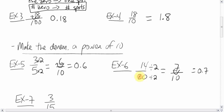Now, some of you might have thought, oh, I can make 20 into 100. And you can do it that way as well. 20 can become 100 when you times it by 5. Do the same to the top. You get 100 on the bottom. 14 times 5 is 70. Two zeros, two spots. You get 0.70. Now, are these two answers the same? Yes, they are the same.